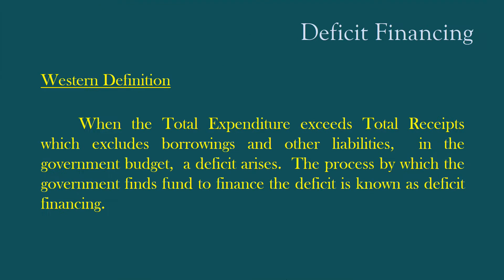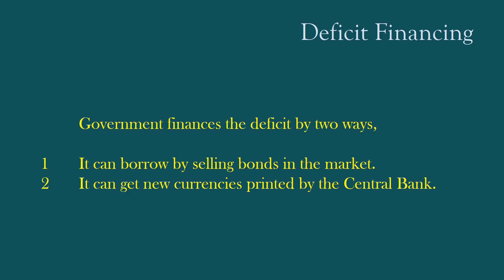Western Definition: When the total expenditure exceeds total receipts, which excludes borrowings and other liabilities in the government budget, a deficit arises. The process by which the government finds funds to finance the deficit is known as Deficit Financing. The government finances the deficit in two ways: 1. It can borrow by selling bonds in the market. 2. It can get new currencies printed by the central bank.